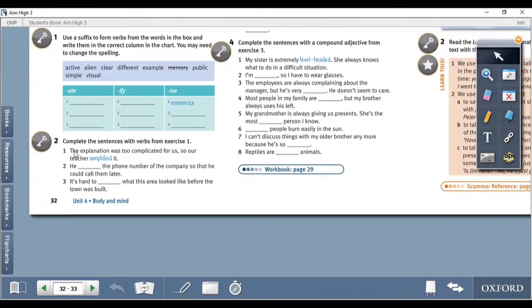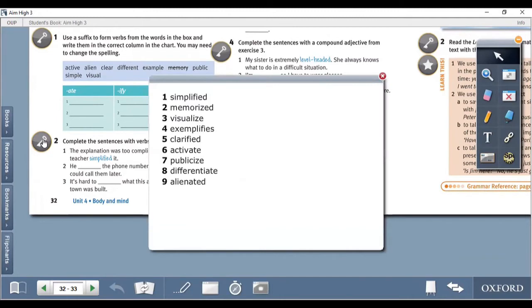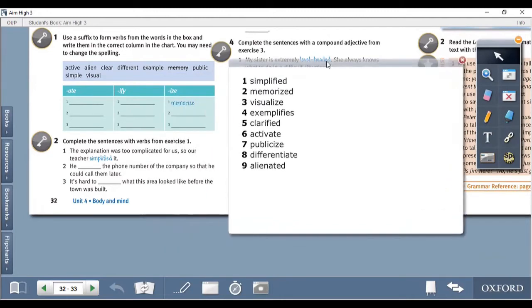Exercise number two, complete sentences with the verbs from exercise number one. Number one, the explanation was too complicated for us so our teacher simplified it. Number two, he memorized the phone number of the company so that he could call them later. Number three, it's hard to visualize what this area looked like before the town was built. Number four, the palace exemplifies the style of architecture typical of the 19th century.